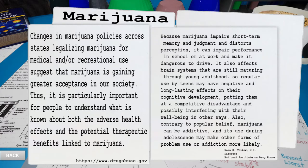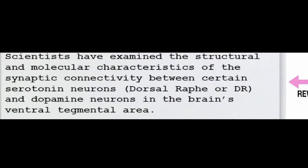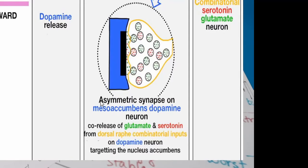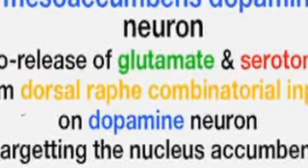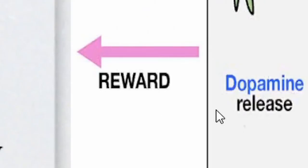Serotonin and behavior: scientists have examined the structural and molecular characteristics of the synaptic connectivity between certain serotonin neurons — dorsal raphe or DR — and dopamine neurons in the brain's ventral tegmental area. Thanks for making this really easy to understand. Next time you see someone who's really struggling with addiction, just remind them that the asymmetric synapse on mesoaccumbens dopamine neurons, co-release of glutamate and serotonin from dorsal raphe, combinatorial inputs on dopamine neurons target the nucleus accumbens — and then you get reward.